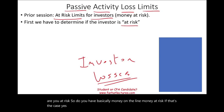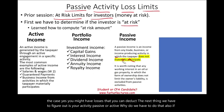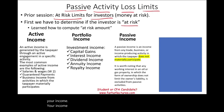The next thing we have to figure out is, is your activity passive or active? The IRS looks at your income and buckets it into three categories: active income, portfolio income, and passive income.